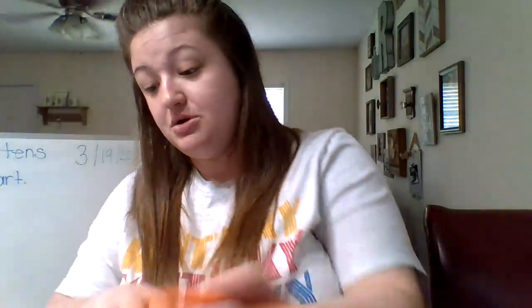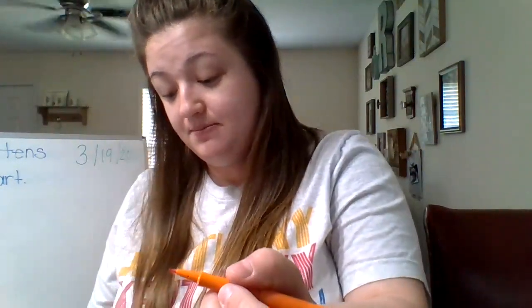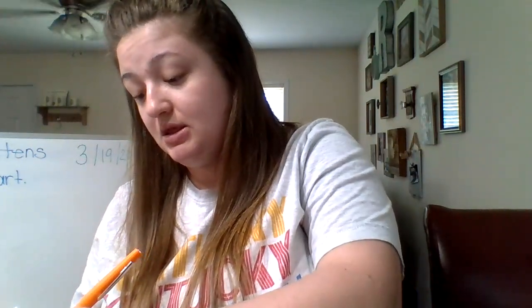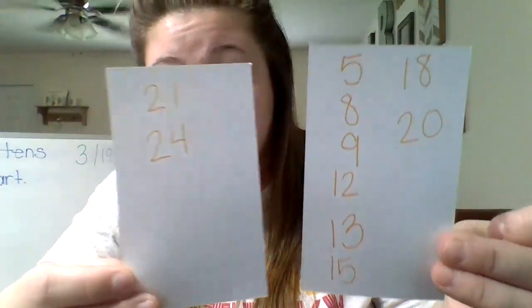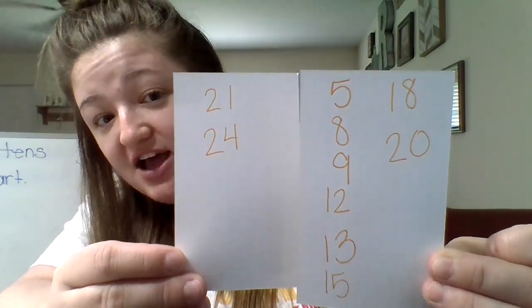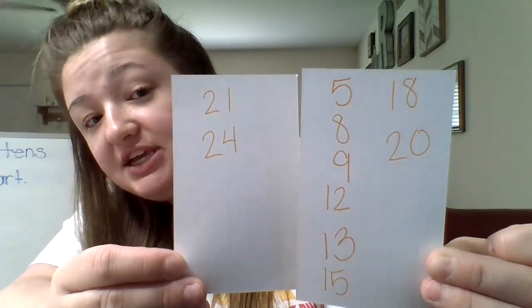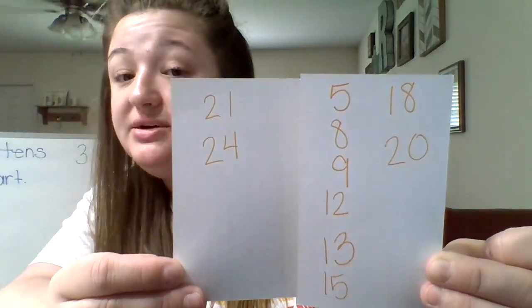On the last page, which are word problems — your parents may have to help you with some words — you're going to do numbers 21 and 24. So you only have to do two on that page: numbers 21 and 24. So the problems you're going to do on your own today are: 5, 8, 9, 12, 13, 15, 18, 20, 21, and 24.